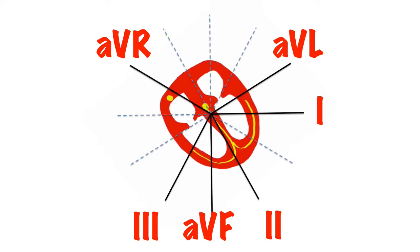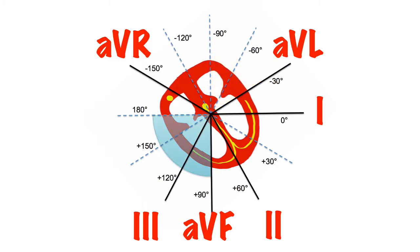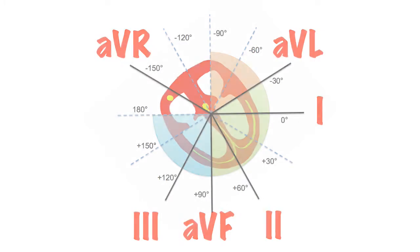Back to our axis. The normal cardiac axis is considered to be from plus 90 to minus 30 degrees. Left axis deviation goes from minus 30 to minus 90 degrees. Right axis deviation goes from plus 90 to plus 180 degrees. Anything outside this is termed extreme axis deviation, which is rare.